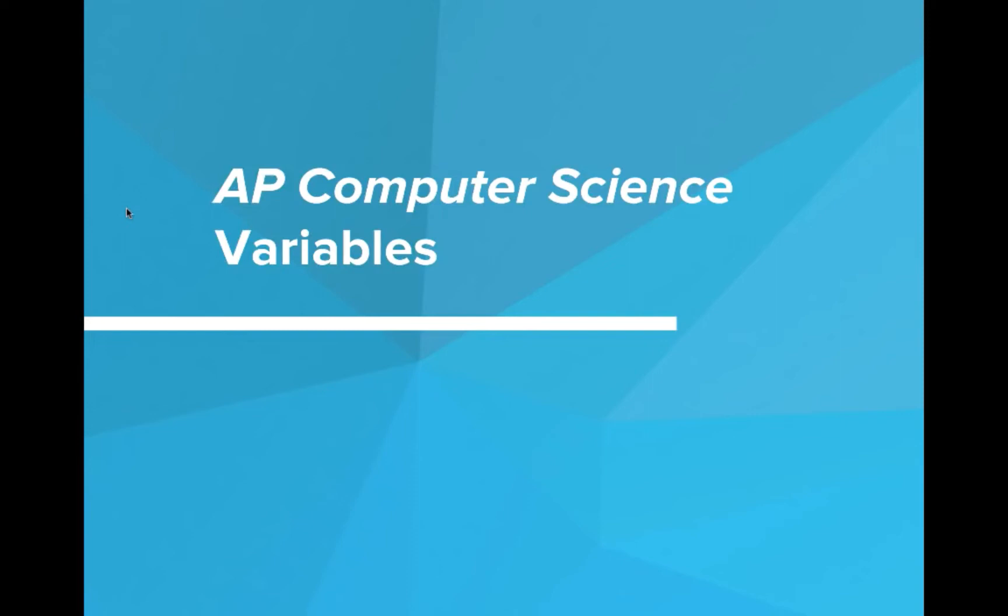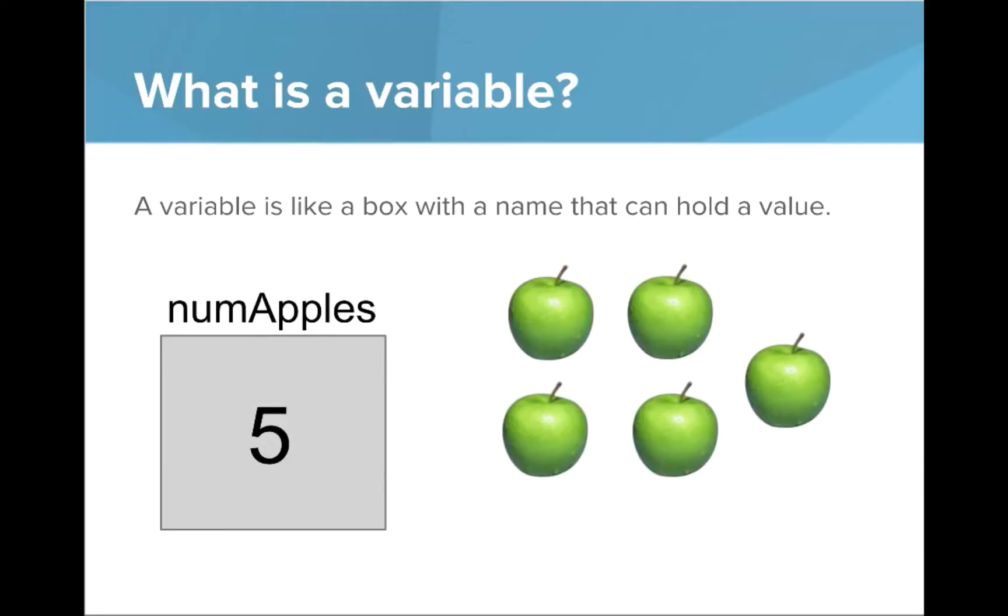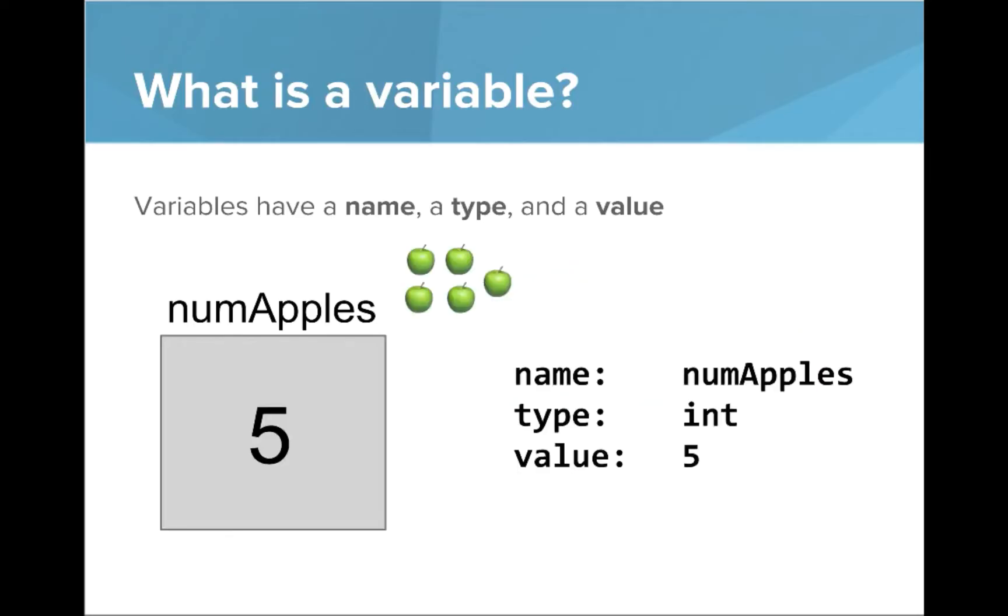Hi, in this video we're going to talk about variables. So what's a variable? A variable is like a box with a name that can hold a value. Here I have a variable called numApples with the value 5 that represents these five apples here. Remember, variables have a name, a type, and a value.